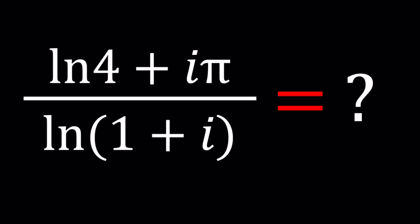And in the numerator, we kind of have like a weird sum, ln 4 and i pi. So it's kind of like a complex number given in standard form like a plus bi, right?